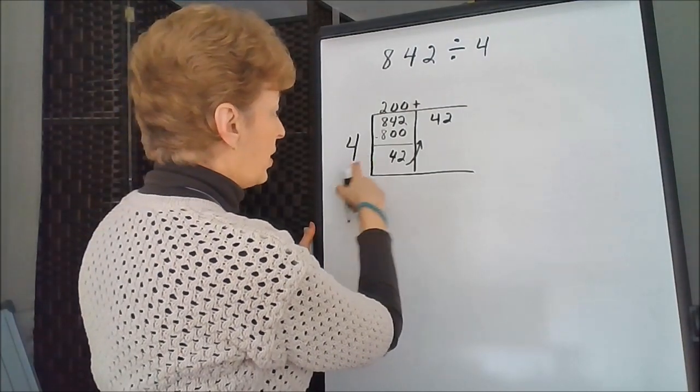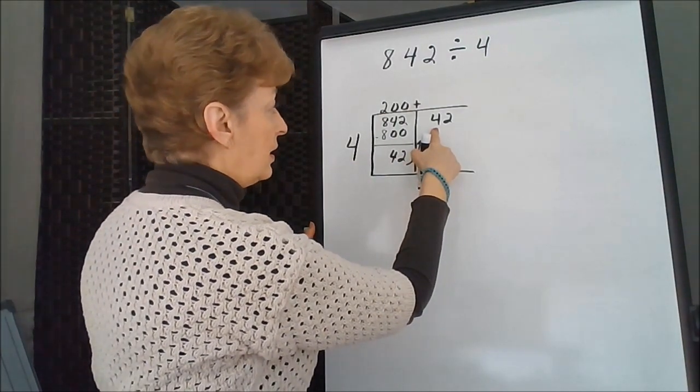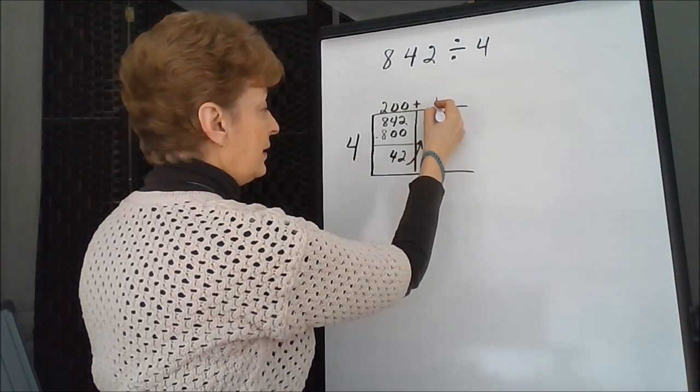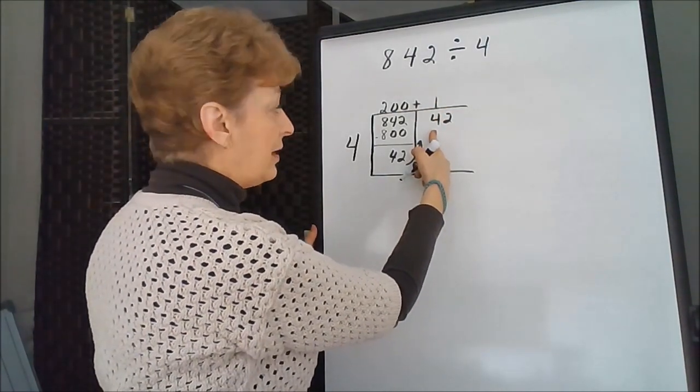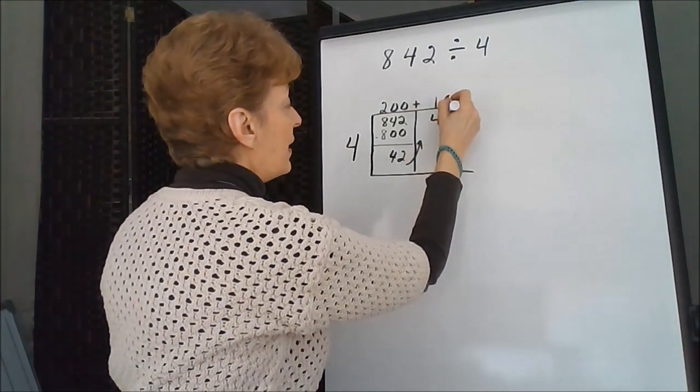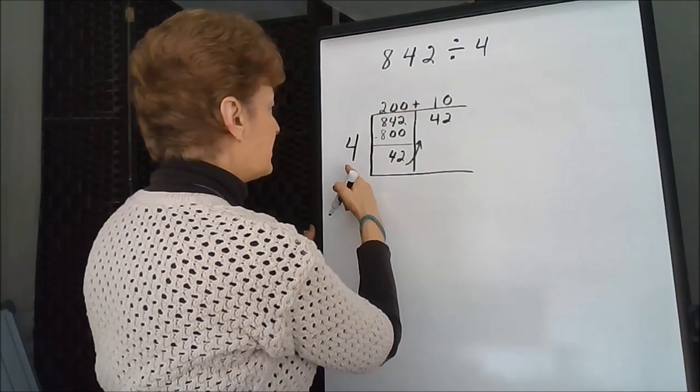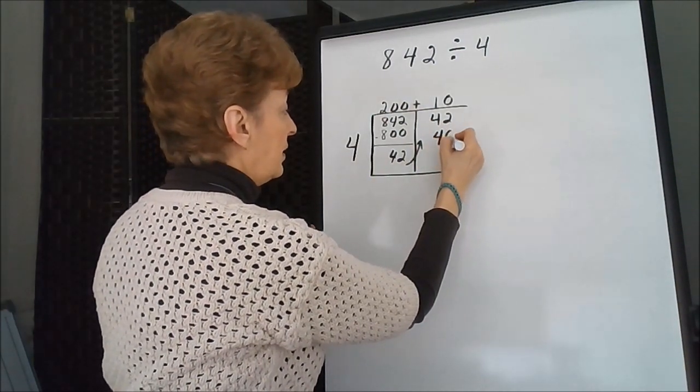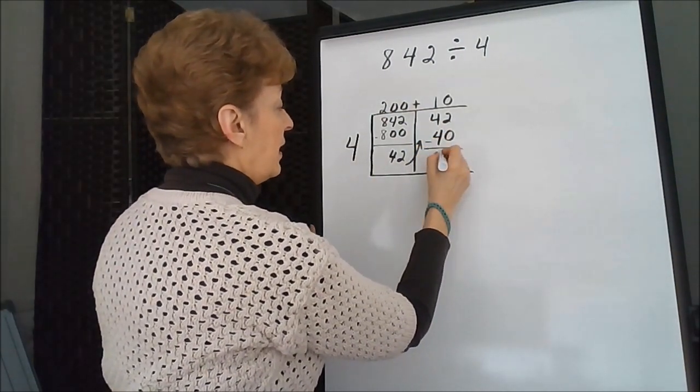How many times does 4 go into 4? Well, it goes in one time, but I'm in the tens column, so I'm going to put a zero on that. 10 times 4 is 40. Subtract. I get 2.